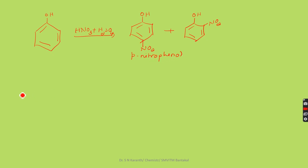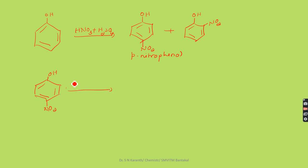Paranitrophenol further reacts with sodium borohydride. The nitro group in the para position, along with the hydroxyl group, reacts with sodium borohydride or hydroxyl amine, producing para-aminophenol — that is, NH2 para-aminophenol.